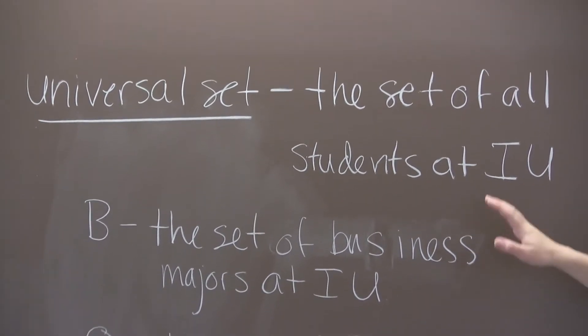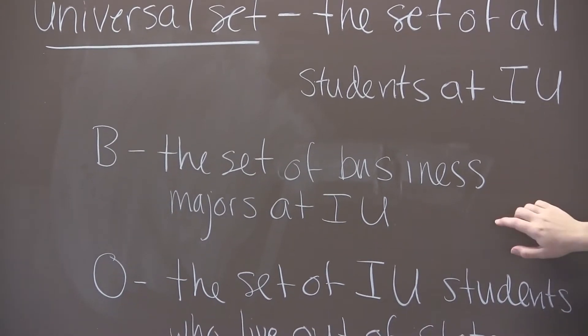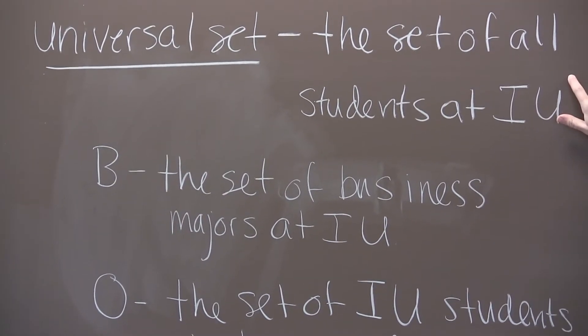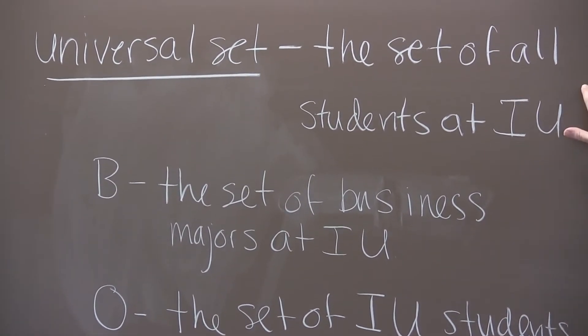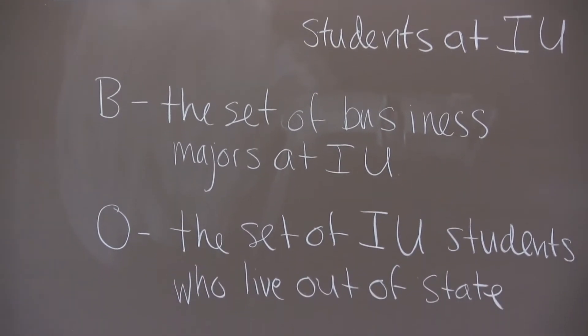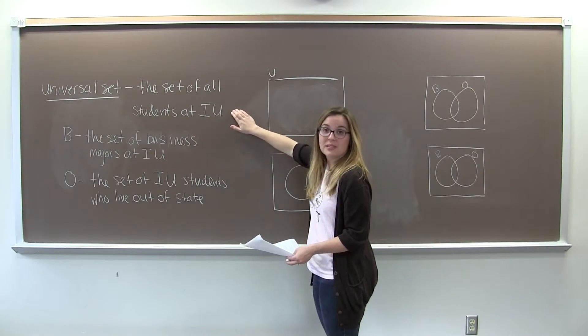We'll call B the subset of the universal set, the set of business majors at IU. We say it's a subset because notice anybody who's a business major at IU is also a student at IU. So everything that lives in B lives in U. And we'll call O the set of IU students who all live out of state. Once again, notice this set O is part of this set U.